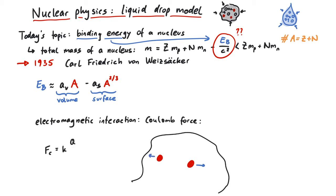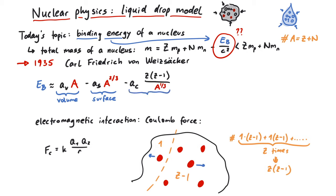which goes charge times other charge divided by distance. So Z protons each feel Z minus one other protons, and if we assume their distance to be approximately the radius, we can also write this part in terms of A.